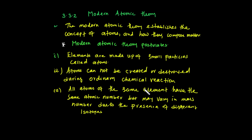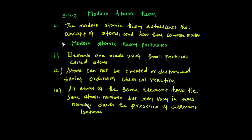Atoms of the same elements have the same atomic number — that is, the same proton number. However, the mass will vary. Why? Due to the presence of different isotopes. This is accounted for by the modern atomic theory.